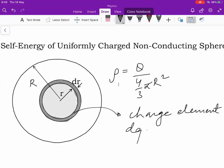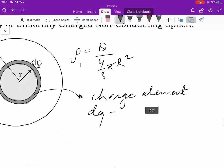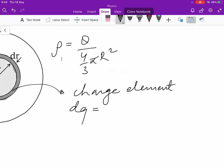What is this? This is a charge element. The charge is dq. So, this dq charge is what? Rho into elemental volume. You can think of it as a paste of charge.